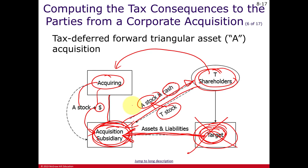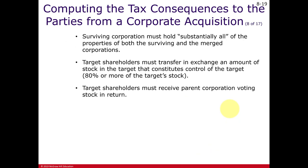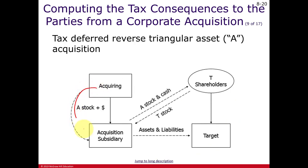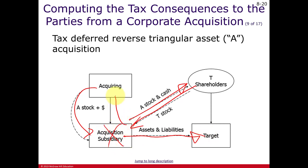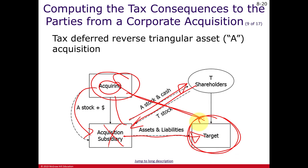If the target has to stay in business because it has contracts it cannot assign to anyone else, we call that a reverse acquisition or reverse merger. Same stock and cash go to the sub, same exchange of acquiring stock for target stock — but this time the merger transfers the assets and liabilities to the target. The subsidiary goes out of existence, the target stays in existence with the acquiring corporation now owning it as a subsidiary, and those non-assignable contracts remain intact.